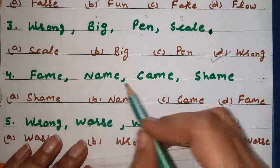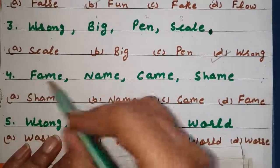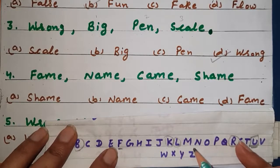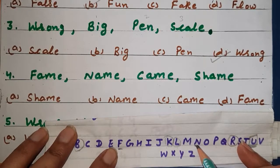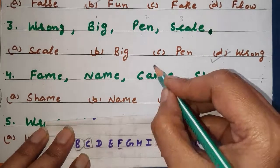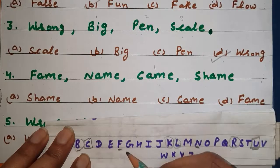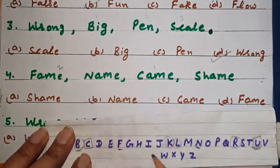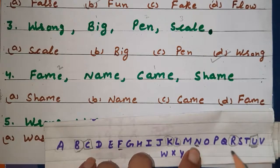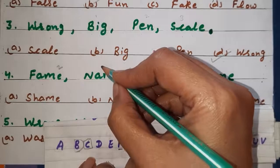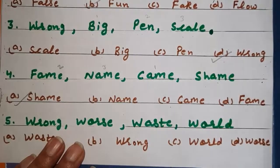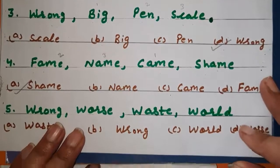Now fame, name, game, shame. F is here. Then N. C is the very first. It will be at the first position. F will be at the second position. Then N here. And shame, S here. N is at third position. So we want the last. Last is shame, option A. Right.